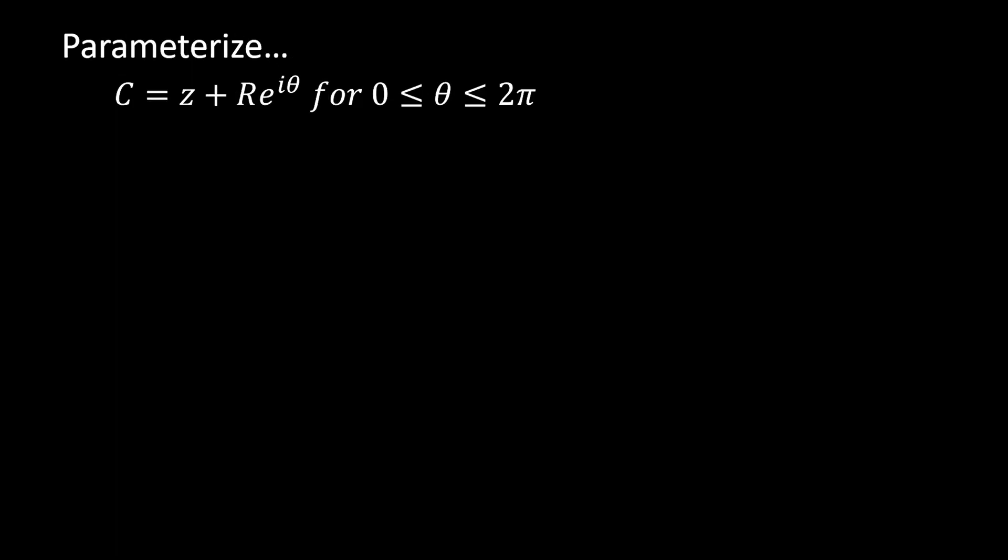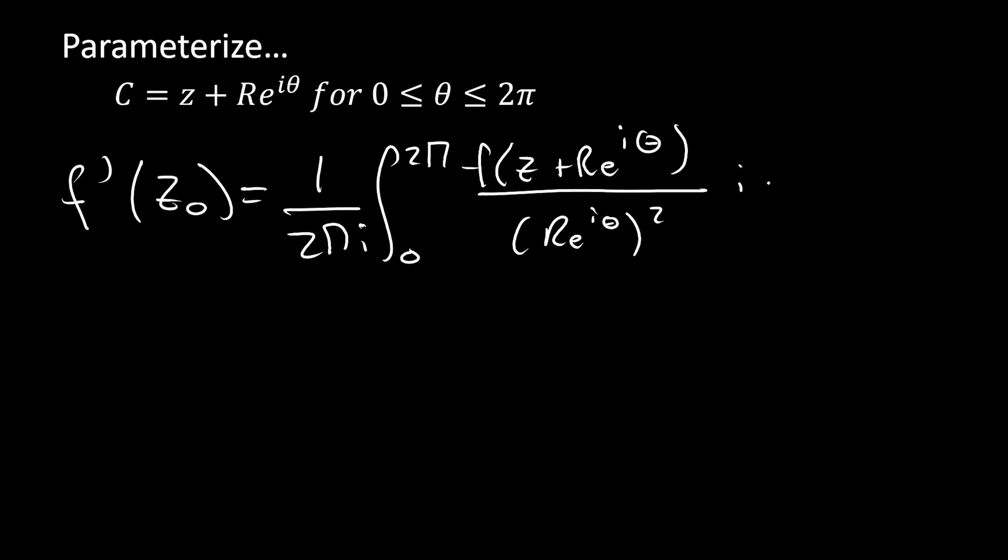The next step is to parameterize this, and we're going to parameterize this with our simple closed curve being a circle of radius R at the origin of the complex plane. So C is going to be z plus R e to the i theta for theta on bounds 0 to 2 pi, and when we implement that we're going to get the following: f prime of z0 is equal to 1 on 2 pi i integral on bounds 0 to 2 pi, f of z plus R e to the i theta on R e to the i theta squared times i R e to the i theta d theta. And we can simplify it to get the following here.